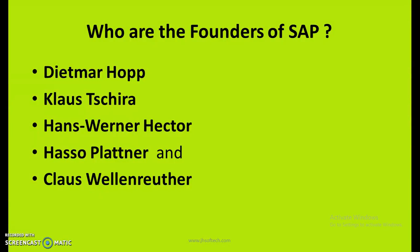Who are the founders of SAP? We need to remember their names — if this question pops up, it would be very awkward if you couldn't answer it. The five founders of SAP are: Dietmar Hopp, Klaus Chira, Hans Wellen-Rudel, Hasso Plattner, and Klaus Wellen-Rudel. These were five ex-IBM colleagues who started SAP because they couldn't implement their vision at IBM, so they left and started their own company in Germany.